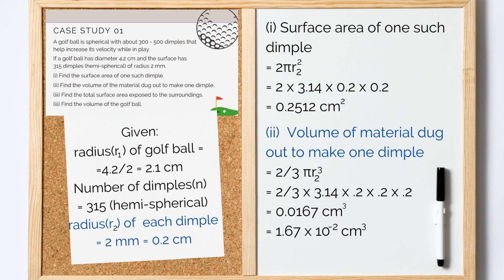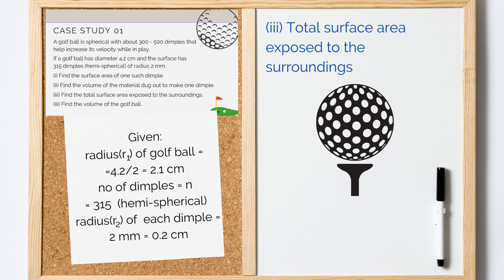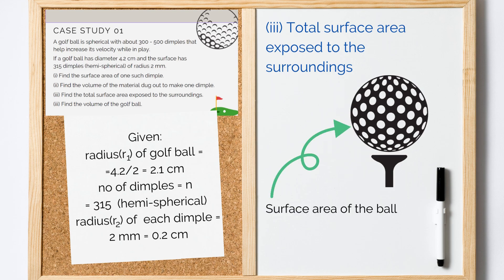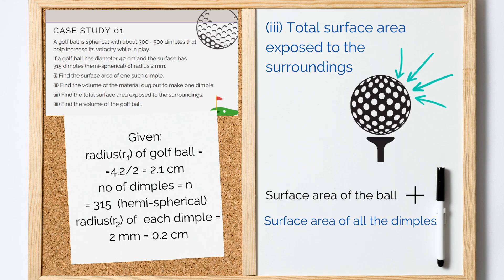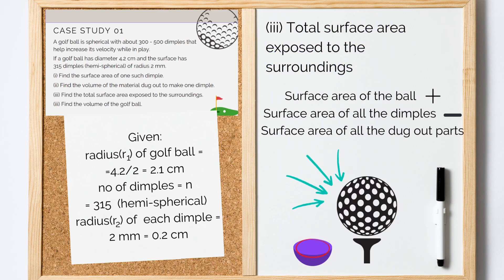Now, pay attention to the third part which is to find the total surface area exposed to the surroundings. Let's first understand what we need to find here. The total surface area exposed would be surface area of the ball plus surface area of all the dimples minus surface area of the dugout parts of all the dimples together. I'll repeat: surface area of the ball plus surface area of all the dimples minus surface area of the parts that have been dugout. Clear? Let's calculate now.